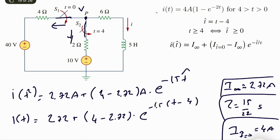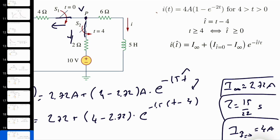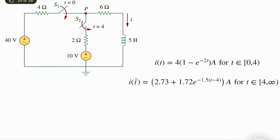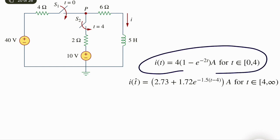This substitution is critical. You can further simplify this, but if you don't plot t-hat back in terms of t, your solution will be incomplete. So: i(t) equals 4(1 minus e to the power minus 2t) for t from 0 to 4, and i(t) equals 2.73 plus 1.72 times e to the power of minus 1.5 times (t minus 4) for t greater than or equal to 4. This is the full range of the current from 0 to infinity.